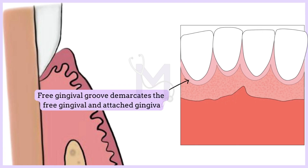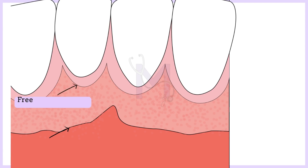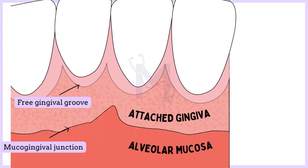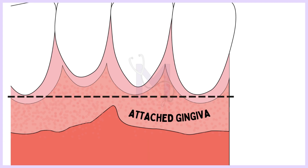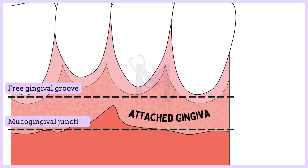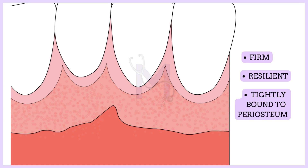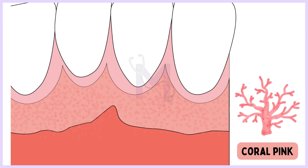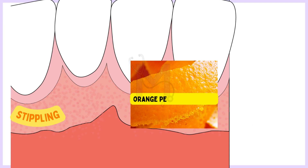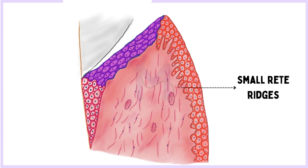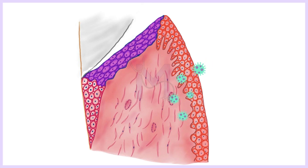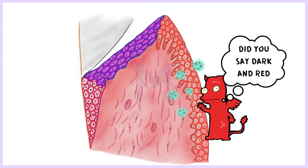Let us now move on to understand the attached gingiva. The free gingival groove separates the free gingiva from the attached gingiva. Similarly, we have the mucogingival junction that demarcates the attached gingiva and the alveolar mucosa. The attached gingiva extends from the free gingival groove to the mucogingival junction and is continuous with the marginal gingiva. The attached gingiva is firm, resilient and tightly bound to the periosteum. In healthy condition, it presents with a coral pink color. A morphological characteristic of attached gingiva is the presence of stippling, or orange peel appearance, which corresponds to small epithelial ridges and develops in areas of high keratinization. When the attached gingiva is inflamed, it loses its superficial stippling and the color turns into dark red.